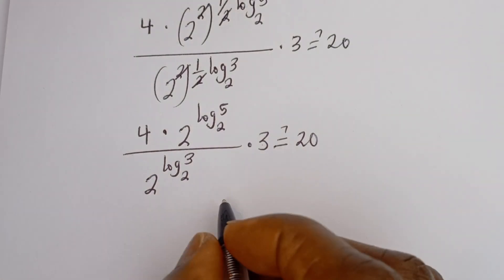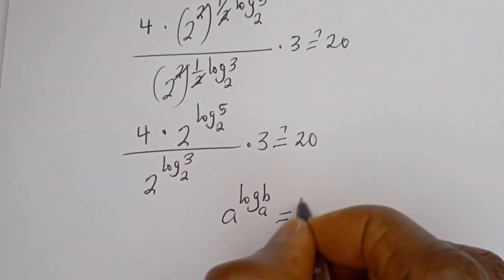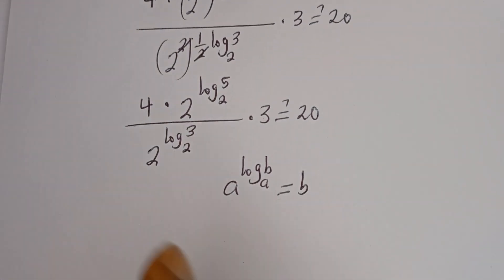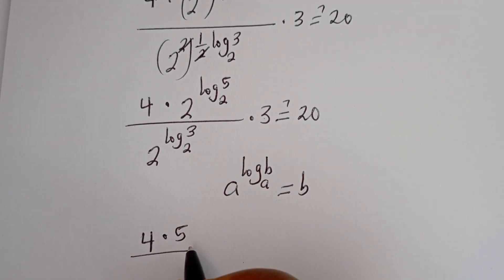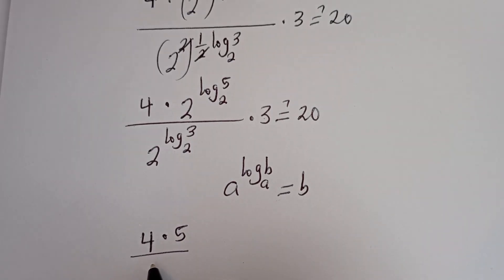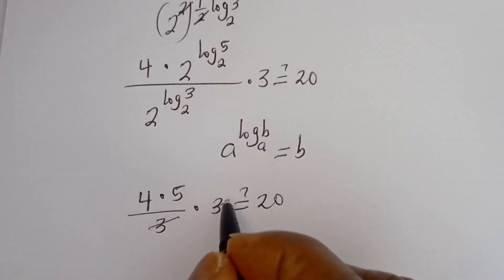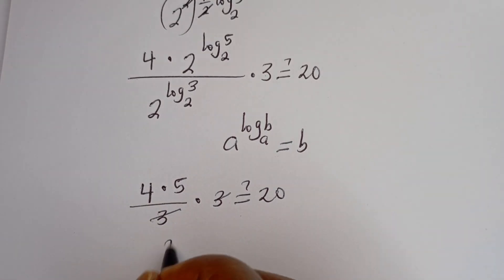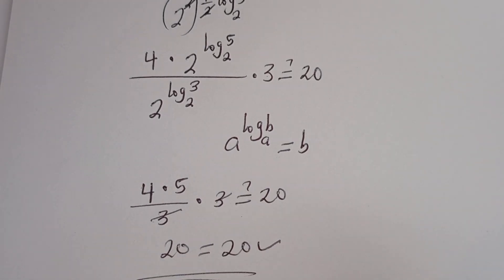Now take note: if you have a to the power of log b base a, this is equal to b. So 2 to the power of log 5 base 2 equals 5, and 2 to the power of log 3 base 2 equals 3. Therefore 4 multiplied by 5 divided by 3 multiplied by 3 equals 4 times 5, which is 20. This equals 20, which is true. I hope you enjoyed the video. Thank you for watching — please don't forget to like, share, comment and subscribe to my channel. Bye!